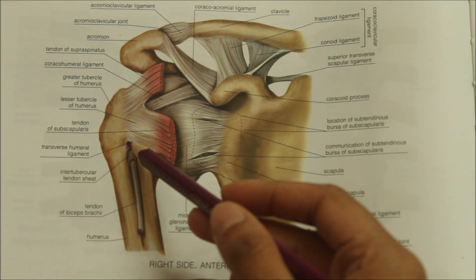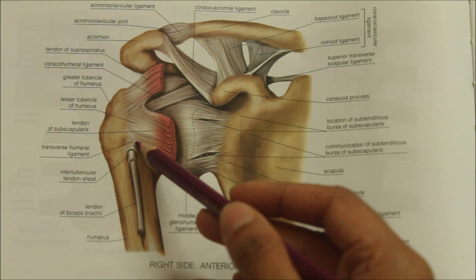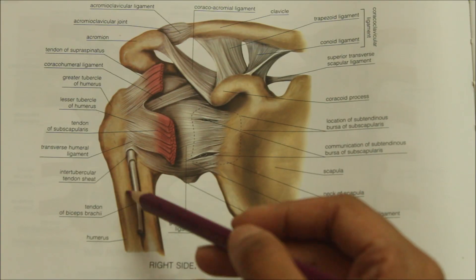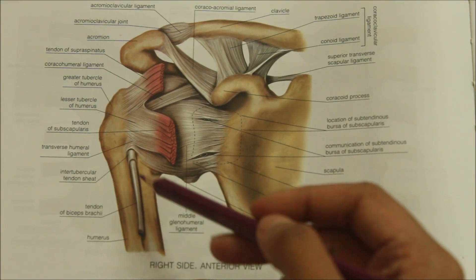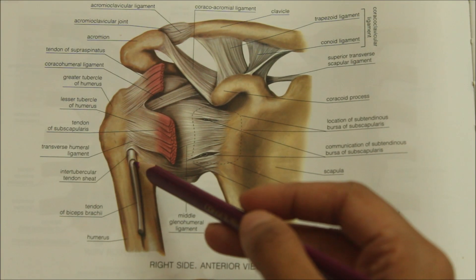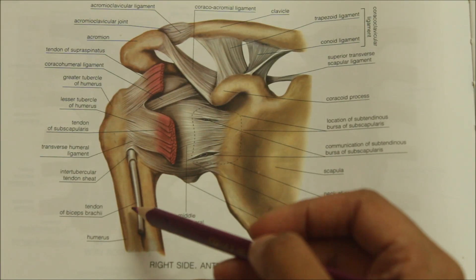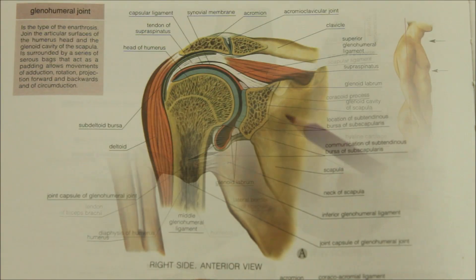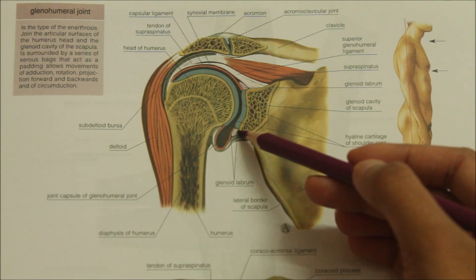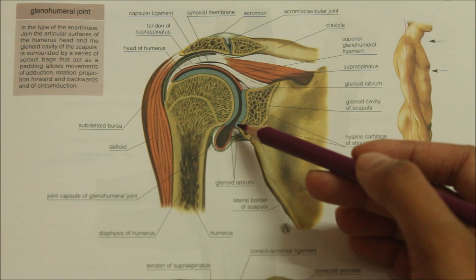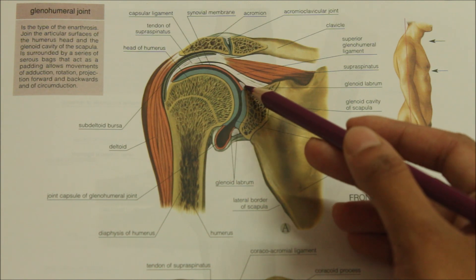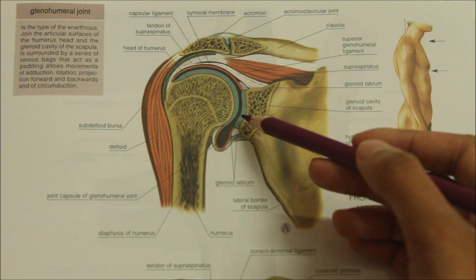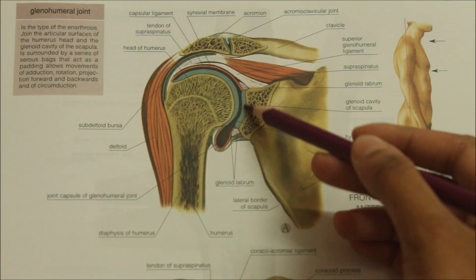The third ligament is the transverse humeral ligament. It bridges the upper part of the bicipital groove, and the tendon of the long head of the biceps brachii passes deep to the ligament. Finally, the glenoidal labrum is a fibrocartilaginous rim which covers the margin of the glenoid cavity and increases the depth of the cavity.